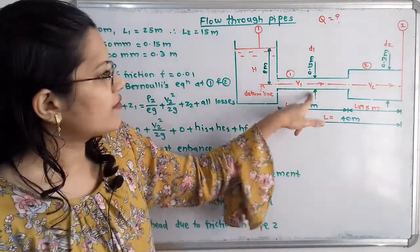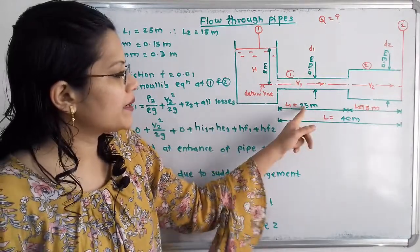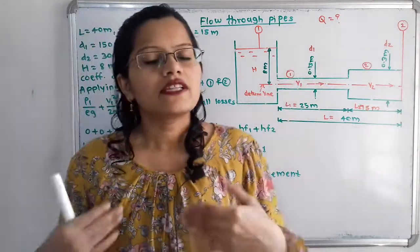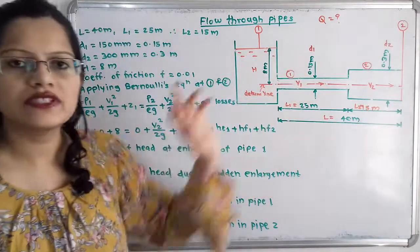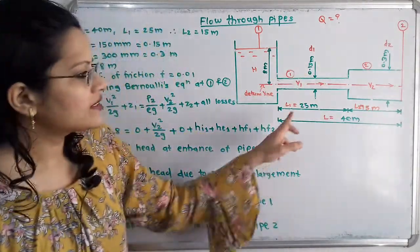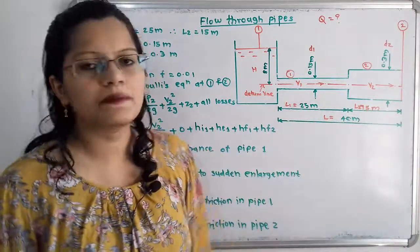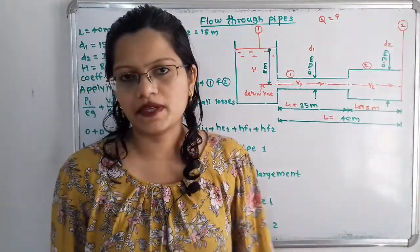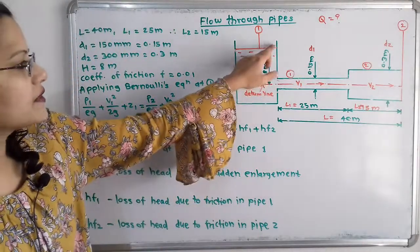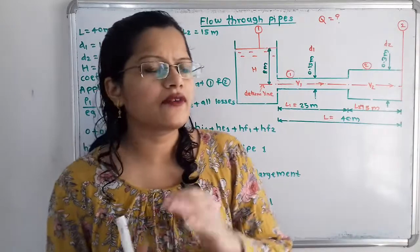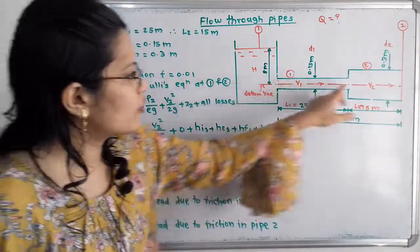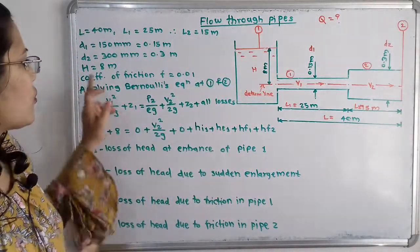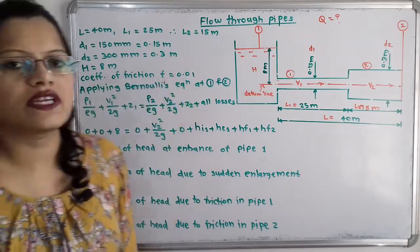For the first pipe, diameter D1 is 0.15 meters and the length L1 is equal to 25 meters. We convert millimeters to meters as the standard unit. The remaining length is 40 minus 25, which is 15 meters. So for the second pipe, D2 is equal to 0.3 meters and L2 is equal to 15 meters. The surface of water is at a height H equal to 8 meters from the center of the pipe. The coefficient of friction F is also given as 0.01.